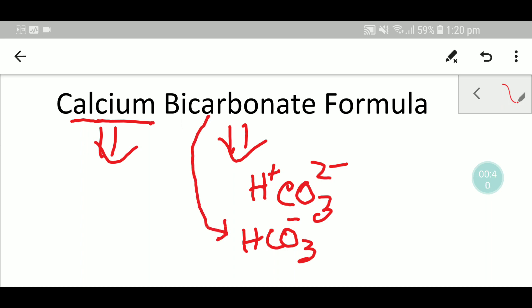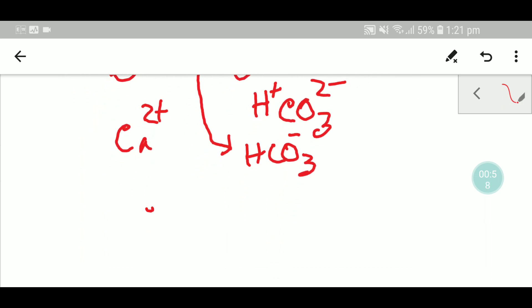Now you have to write the symbol for calcium. Calcium, you know that to achieve the electronic configuration of inert gas, calcium will release two electrons and will get two plus. Now you have to write the two ions side by side.